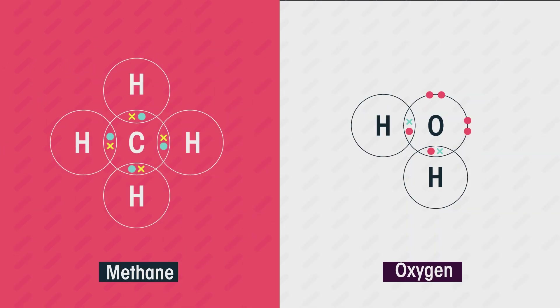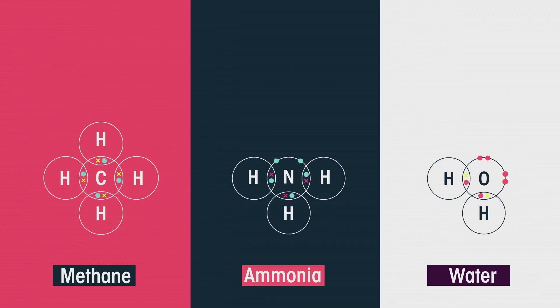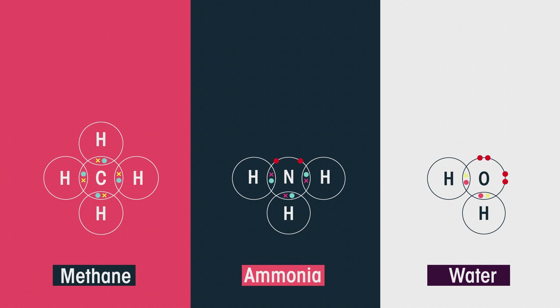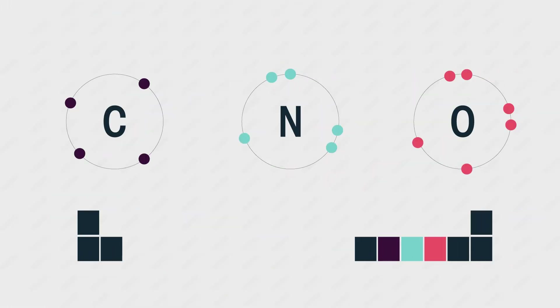By now, you should be comfortable with covalent bonding and familiar with these structures and the ways they arrange themselves in space. Remember: carbon forms four bonds; nitrogen forms three bonds and has one lone pair of electrons; and oxygen forms two bonds and looks bent. You should remember that lone pairs of electrons take up space and repel more than bonds do. Note the pattern in these structures as you travel along the row of the periodic table.